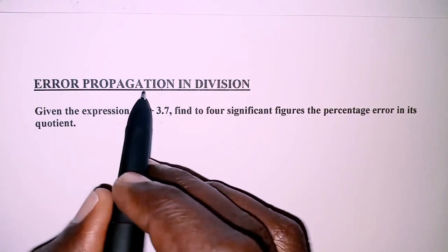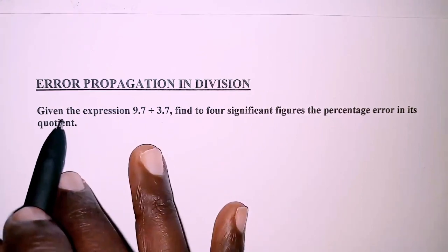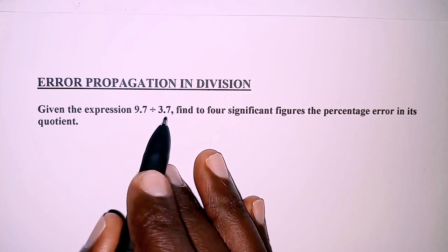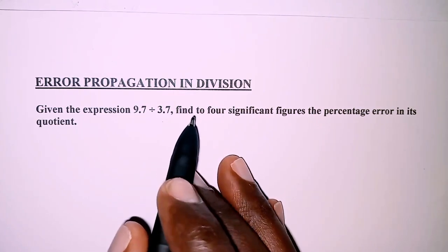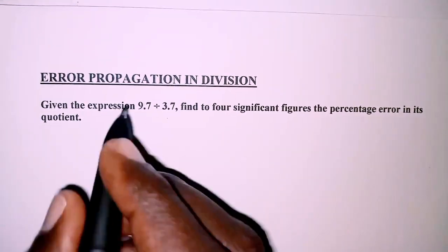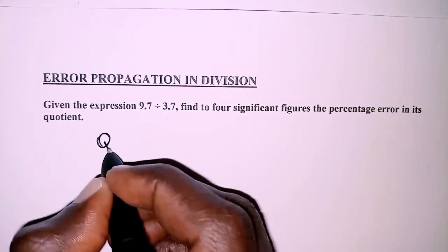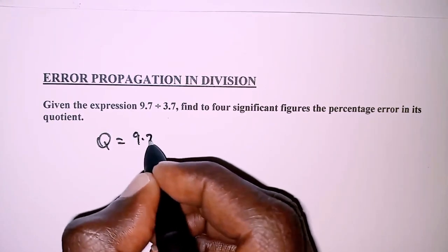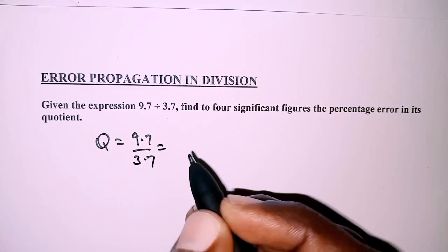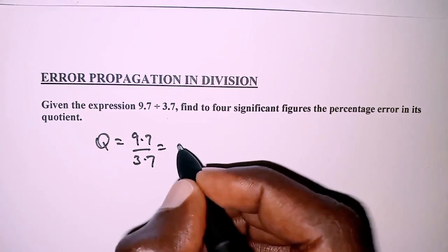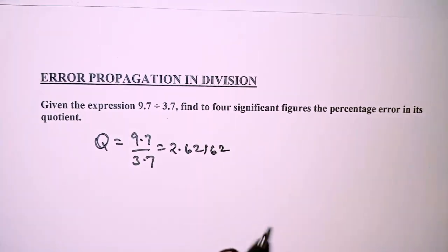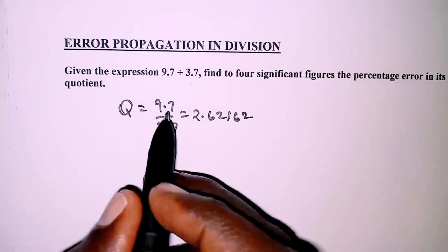The question today is on error propagation in division. The question reads: given the expression 9.7 divided by 3.7, find to four significant figures the percentage error in its quotient. The actual quotient is given by 9.7 over 3.7, which from the calculator gives 2.6216.